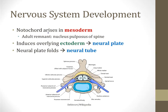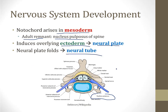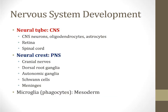The notochord arises in the mesoderm and is an embryonic structure — it does not persist into adulthood. The remnant of the notochord in the adult is the nucleus pulposus of the spine. The notochord induces the overlying ectoderm to become the neural plate, which then folds into the neural tube. A useful rule of thumb: most of the central nervous system derives from the neural tube. Structures include CNS neurons, oligodendrocytes, astrocytes, the retina, and the spinal cord.